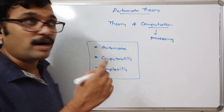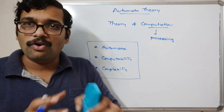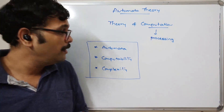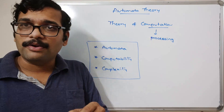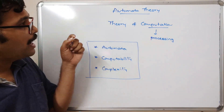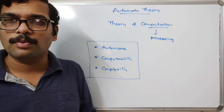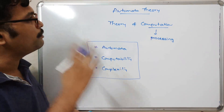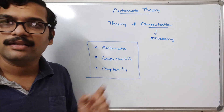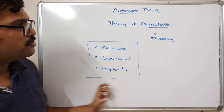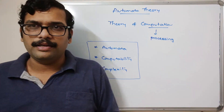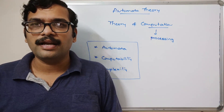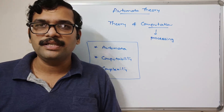In this session we have seen what an abstract machine or mathematical model is, how it is used to write algorithms efficiently, and that implementing automata with a finite number of states is called finite automata. We also covered the applications of automata theory and the three main concepts: automata, computability, and complexity. That's a complete introduction to automata theory. If you enjoyed the session, like, share, subscribe, and thanks for watching.